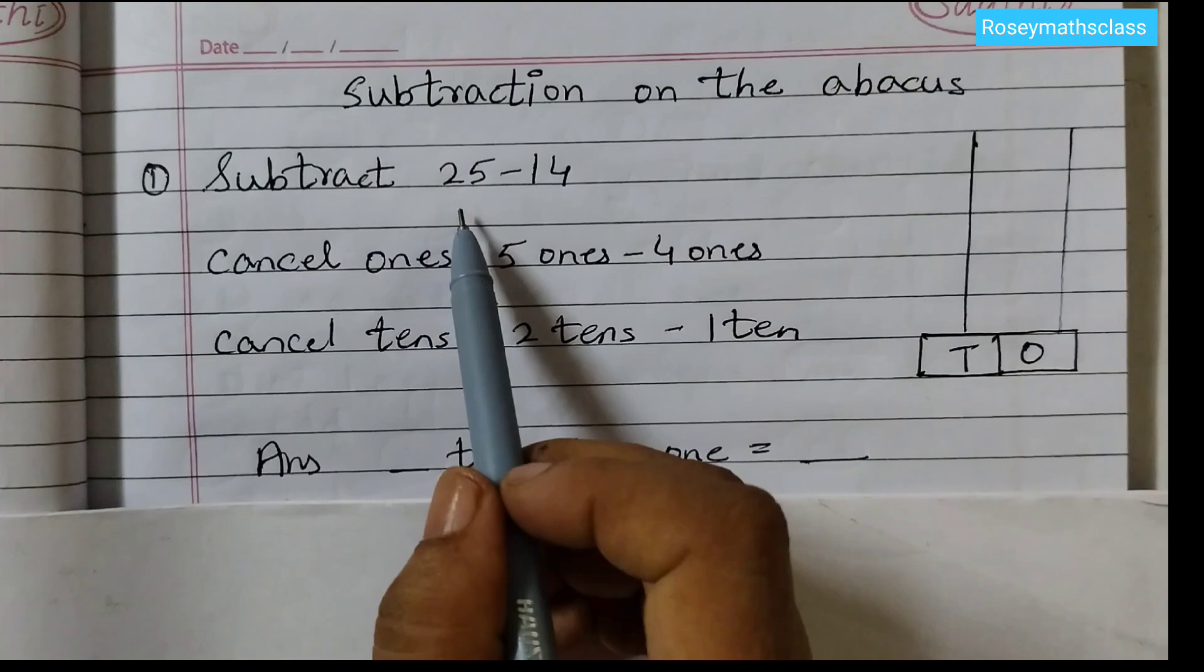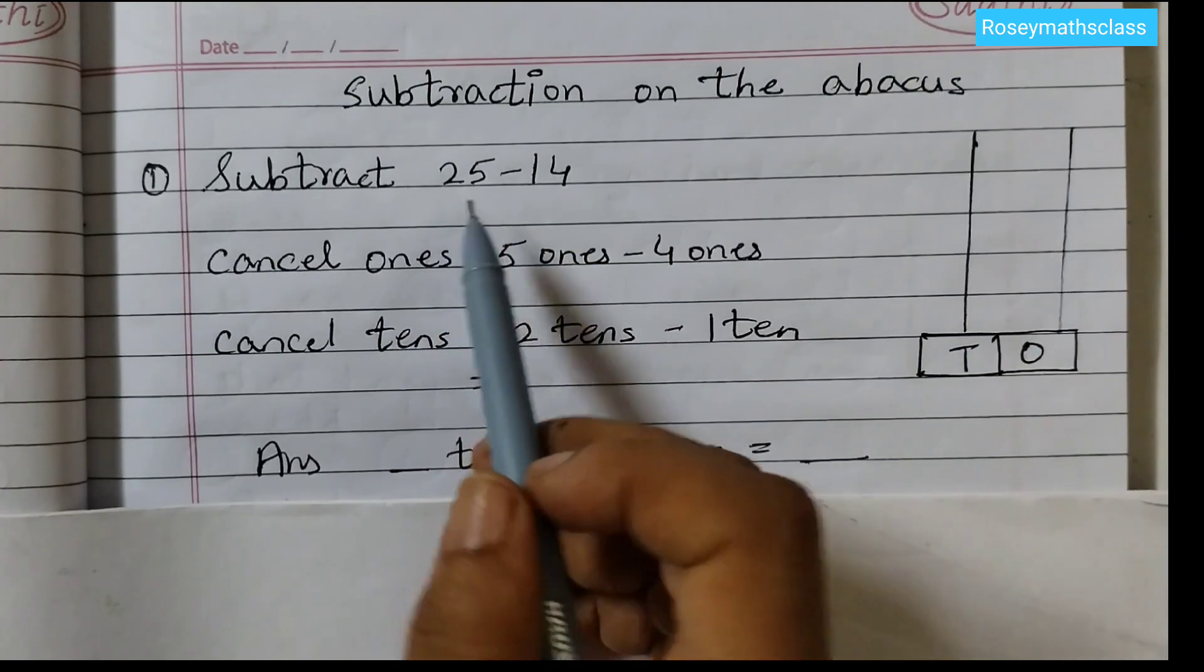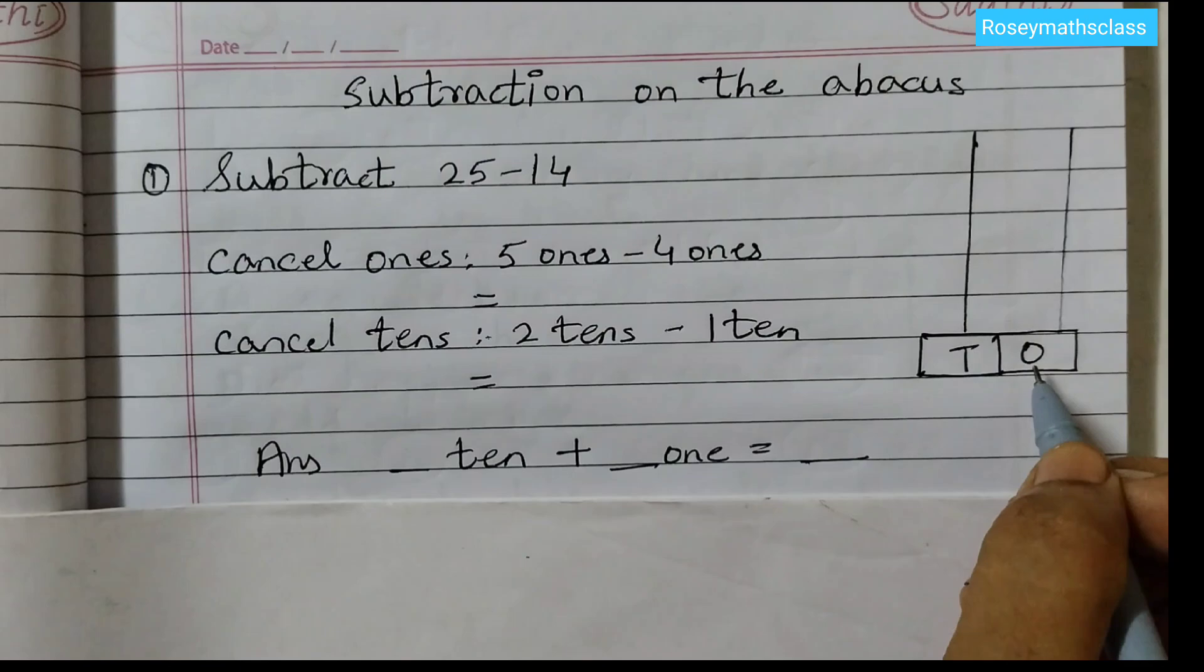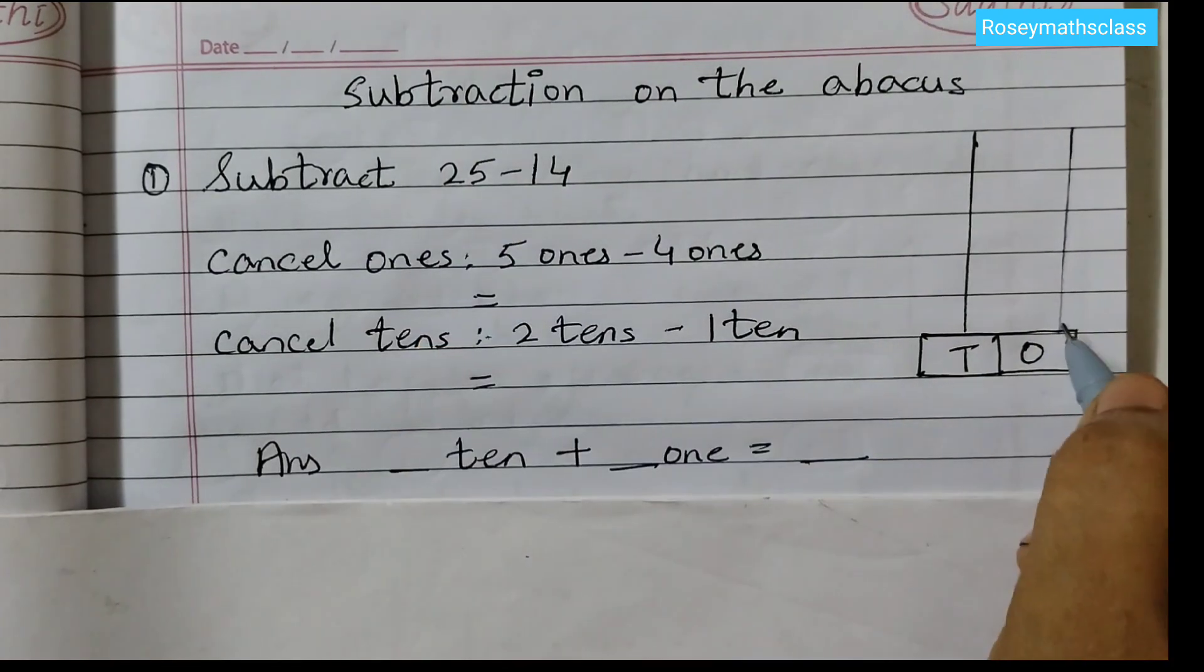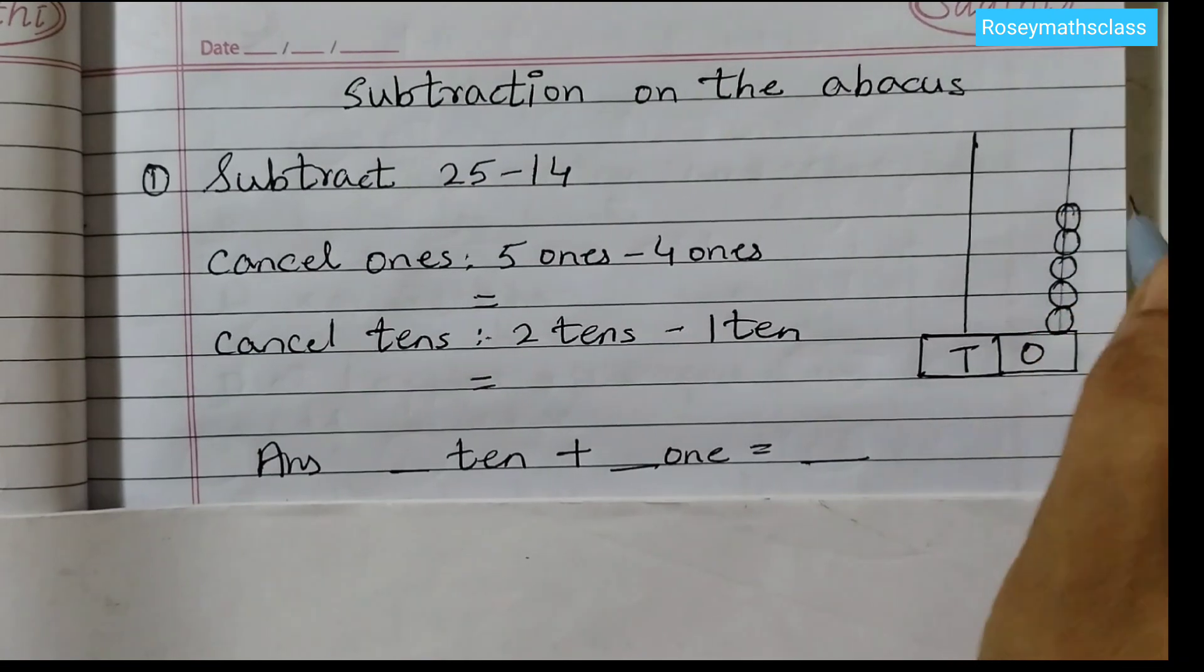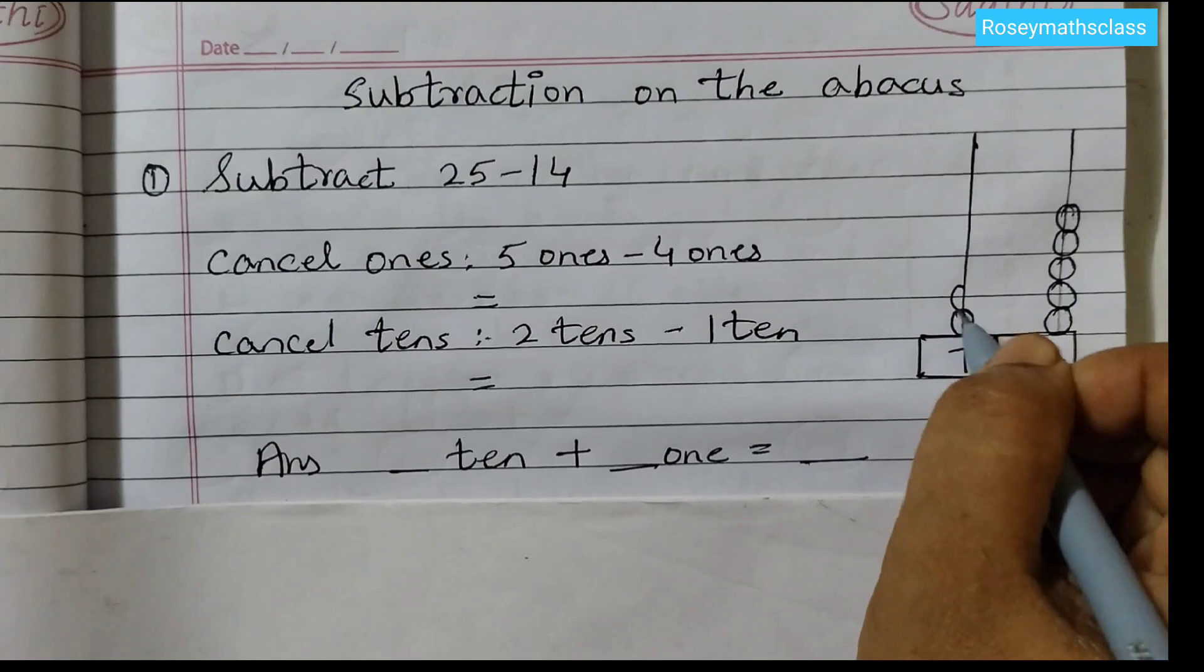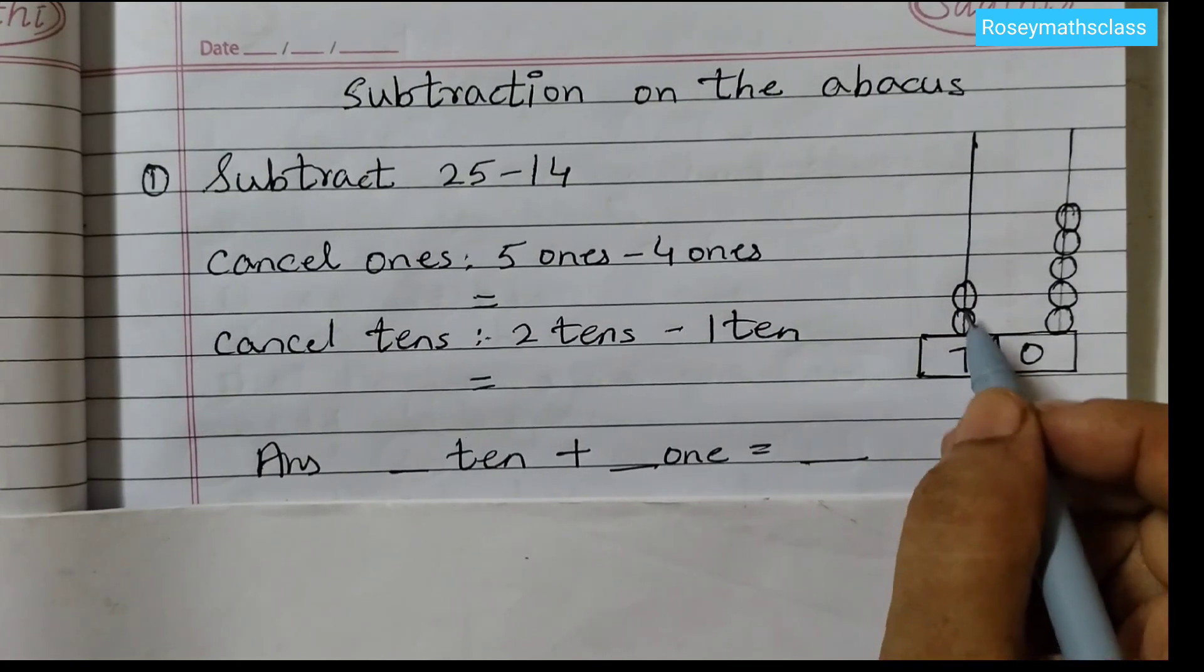So first one is 25 minus 14. So first we will put 25 beads. 1's place, 5 beads, 1, 2, 3, 4, 5. 10's place, 2 beads, 1, 2, okay, 2 beads, 1 and 2.